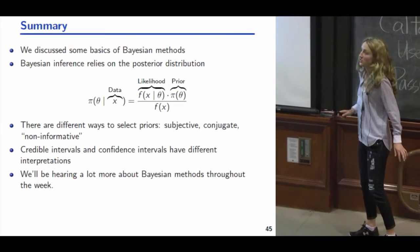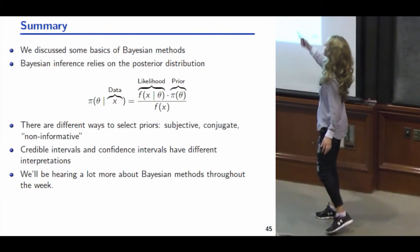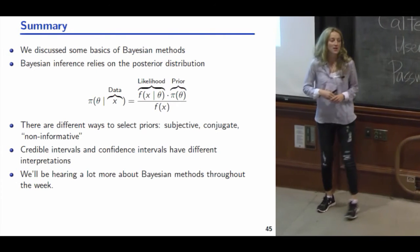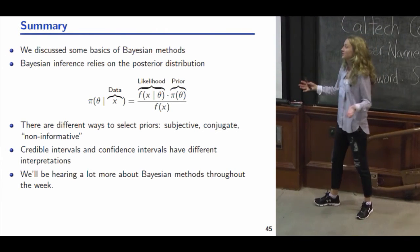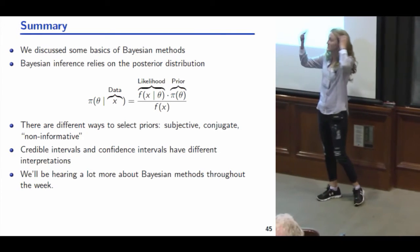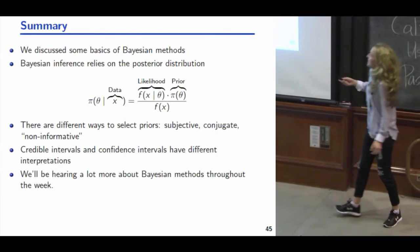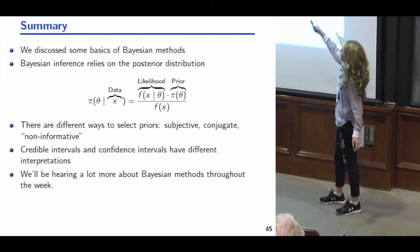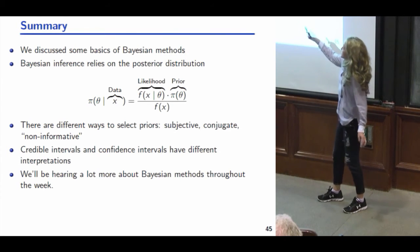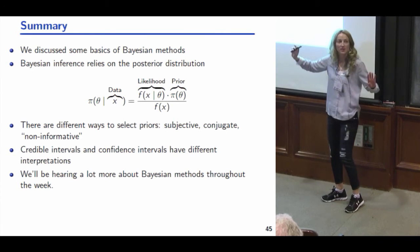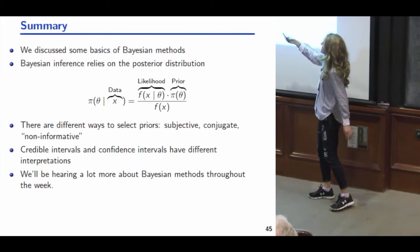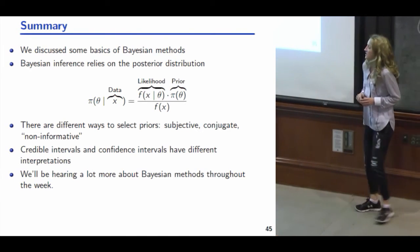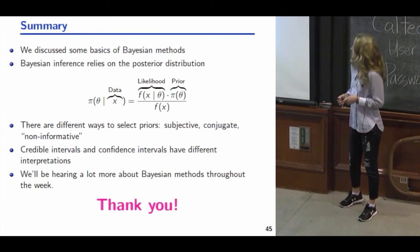To summarize: the posterior is proportional to the likelihood times the prior. There are different ways to select priors — subjective, conjugate, non-informative. Credible intervals and confidence intervals have different interpretations, and that's very important. We'll be hearing a lot more about Bayesian methods later today and throughout the week. Thank you very much.